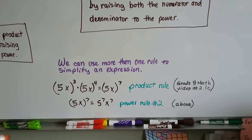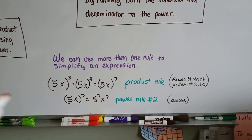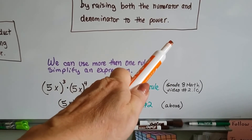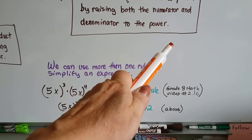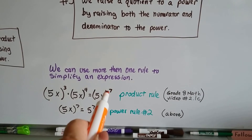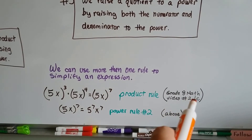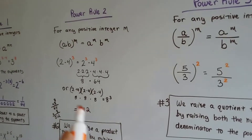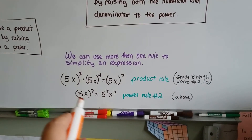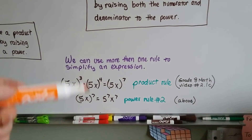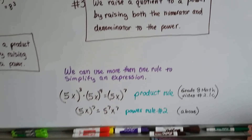We can use more than one rule to simplify an expression. If it says to simplify 5x to the 3rd multiplied by 5x to the 4th, we would use the product rule to get 5x to the 7th power — that's in video 2.1c. Then we could use the second power rule to make it 5 to the 7th times x to the 7th. So we ended up using two different rules to simplify a single expression.